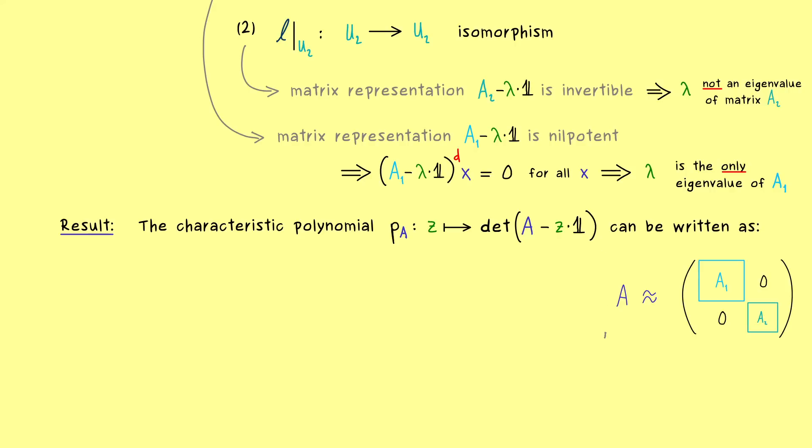And now since A can be written as a block matrix, we can use the formula for determinants of block matrices. And indeed it's quite simple. It's just the determinant of the first block times the determinant of the second block. So this means we have p_A(z) is equal to the characteristic polynomial of A1 times the characteristic polynomial of A2.